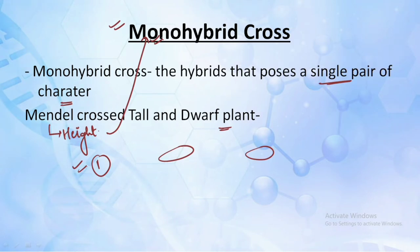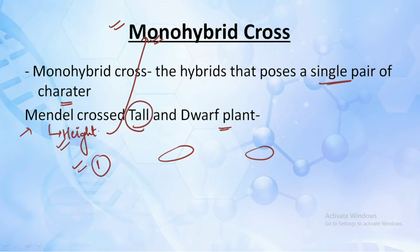Mendel was the father of genetics and he gave various laws in order to understand inheritance properties. We will understand those laws in the next video. In this video, we will understand about the various crosses. Mendel took into consideration the height character, and the two alternates of the height character were the tall plant and the dwarf plant.